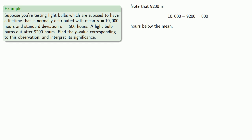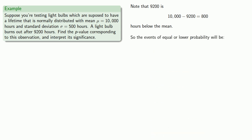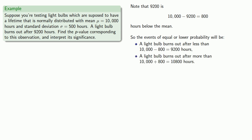9,200 is 800 hours below the mean — that's 10,000 minus 9,200. That means the events of equal or lower probability will be: a light bulb burns out after less than 10,000 minus 800, which is 9,200 hours, or a light bulb burns out after more than 10,000 plus 800, which is 10,800 hours.